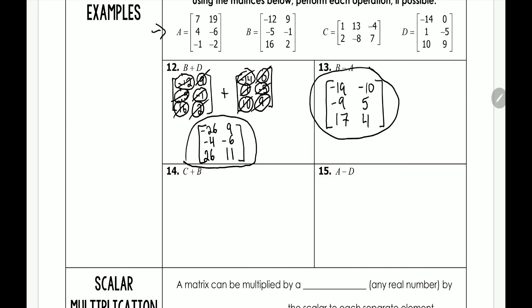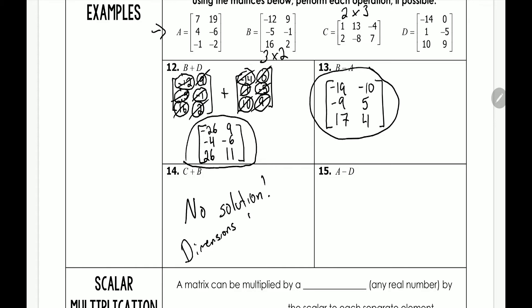For number 14, C plus B — first we check dimensions. C is dimension 2×3 and B is dimension 3×2. Those are not the same, so the answer is no solution. The reason: dimensions do not match. You're going to try number 15 by yourself — make sure you have it completed by the time you turn this in.